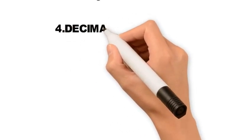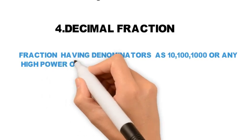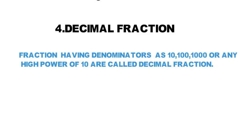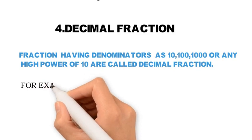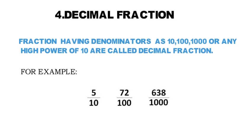Next is decimal fraction. A fraction having a denominator of 10, 100, 1000, or any power of 10 is called a decimal fraction. For example: 5 upon 10 — suppose in a test you obtain 5 marks out of 10 — or 72 marks out of 100. These are examples of decimal fractions. The denominator must be 10, 100, 1000, or any power of 10, such as 10,000, one lakh, or one crore.